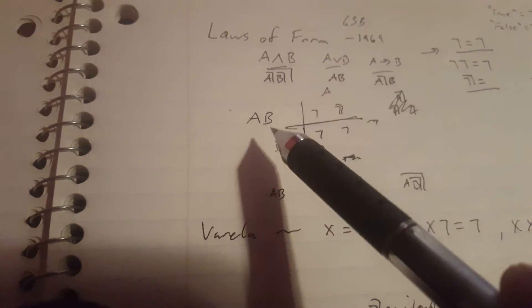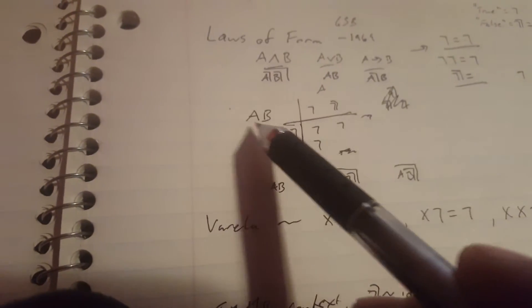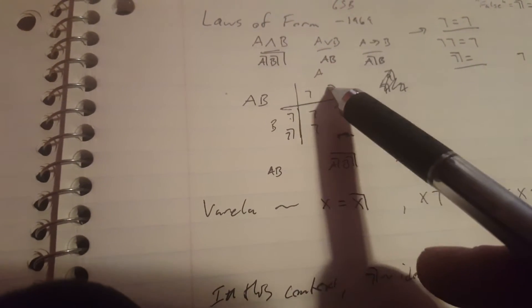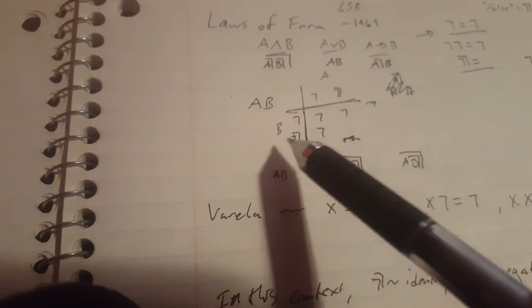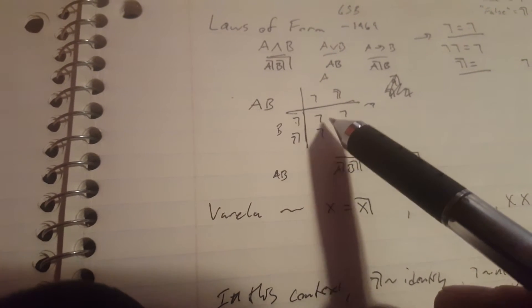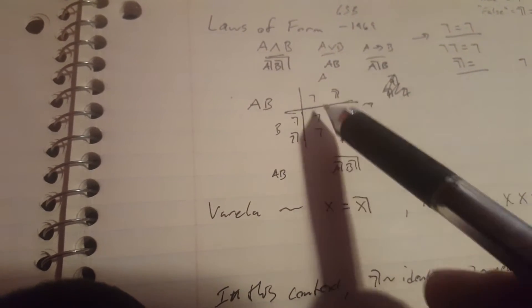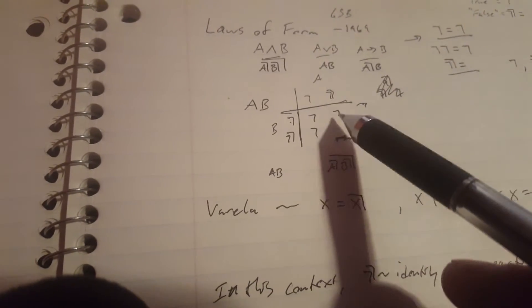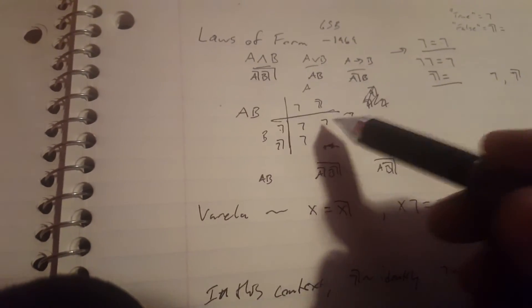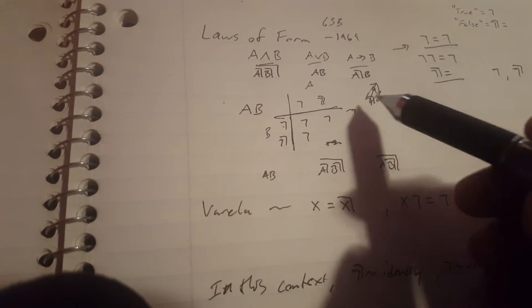You can see how OR works with this little truth table. So for A or B, A can either be marked or the unmarked state. Same with B. Depending on which state they're in, you will get the result, right? This is pretty much similar to the OR function, assuming that the marked state is true.